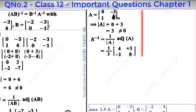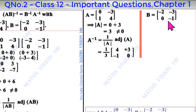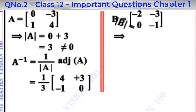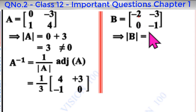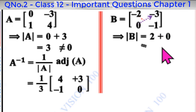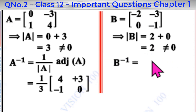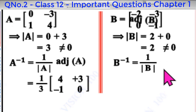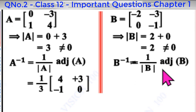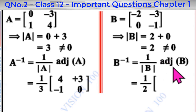Now for matrix B: determinant of B equals first principal diagonal minus 2 into minus 1, which is 2, plus 0 into minus 3, which is 0. Total determinant equals 2, which is not equal to 0. So B inverse exists. B inverse equals 1 by determinant of B, which is 1 by 2, into adjoint of B, swapping principal diagonal and changing sign of other diagonal.